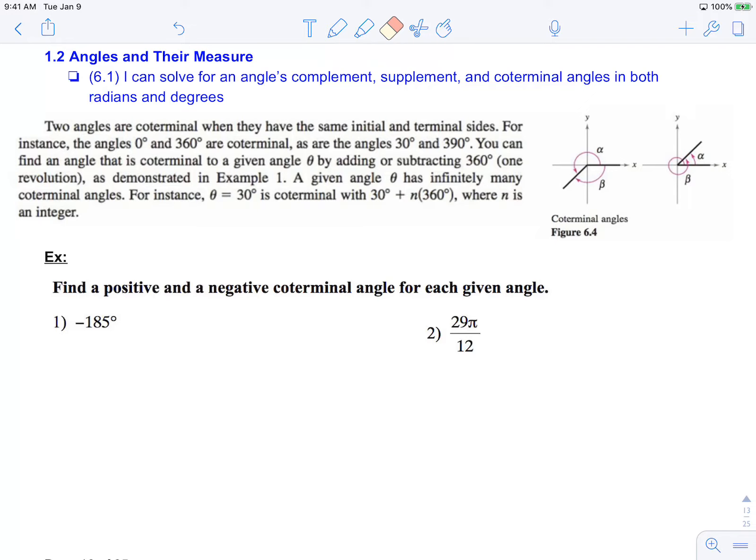Two angles are coterminal when they have the same initial and terminal sides. For instance, the angles 0 degrees and 360 degrees are coterminal.